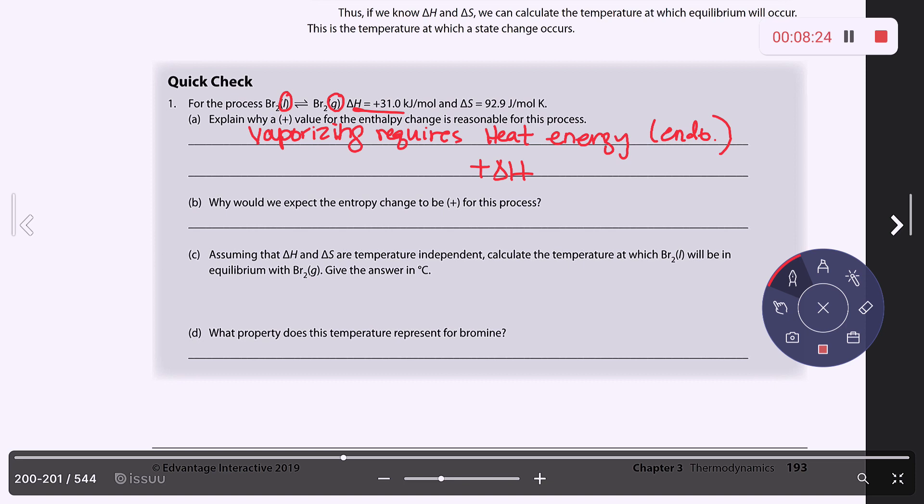B says, why would we expect the entropy change to be positive for this process? Well, the bromine particles will have more random motion in space because it's converting into a gas. And so since there are more microstates, remember W means microstates, that means you would have a positive change in entropy.